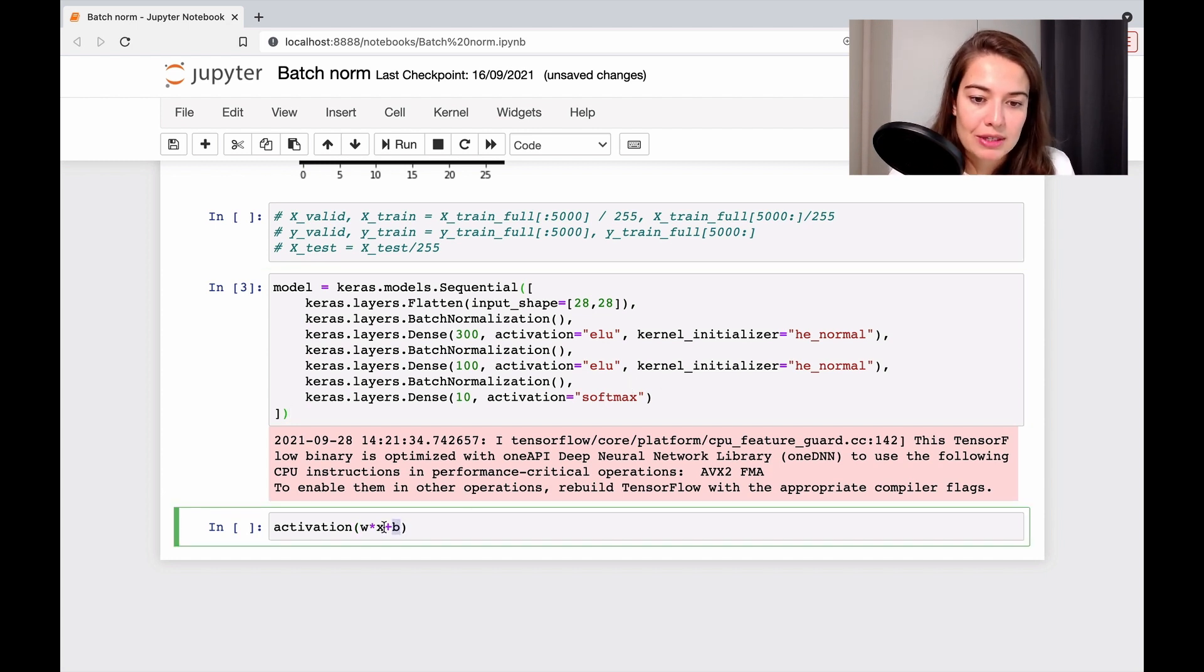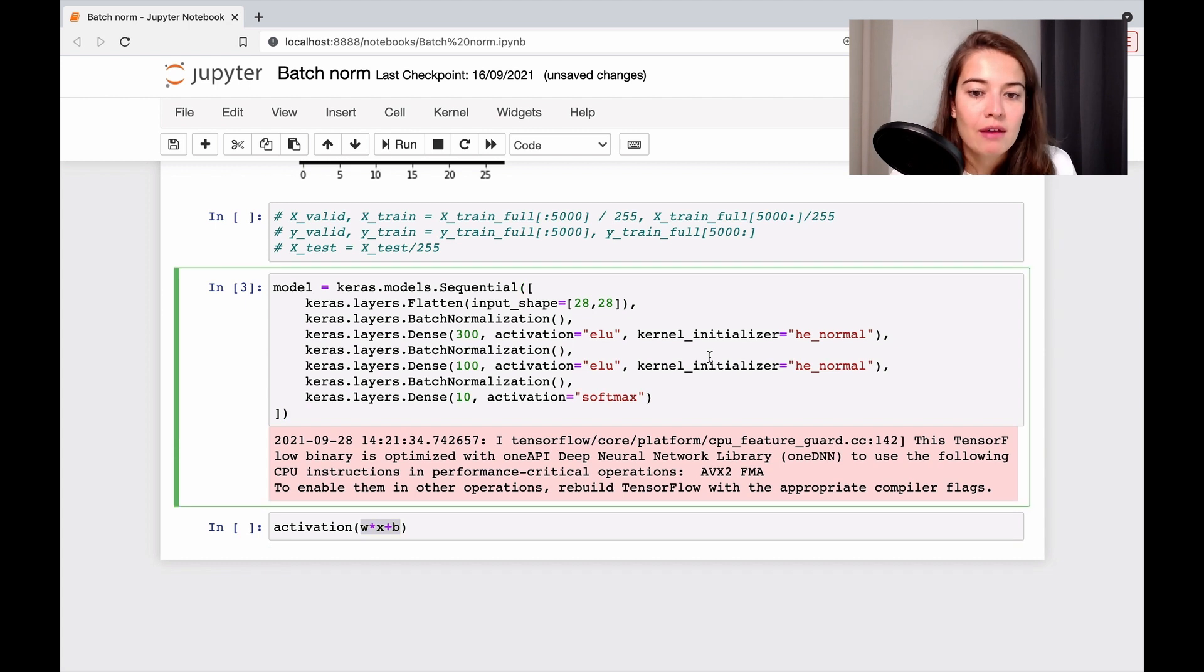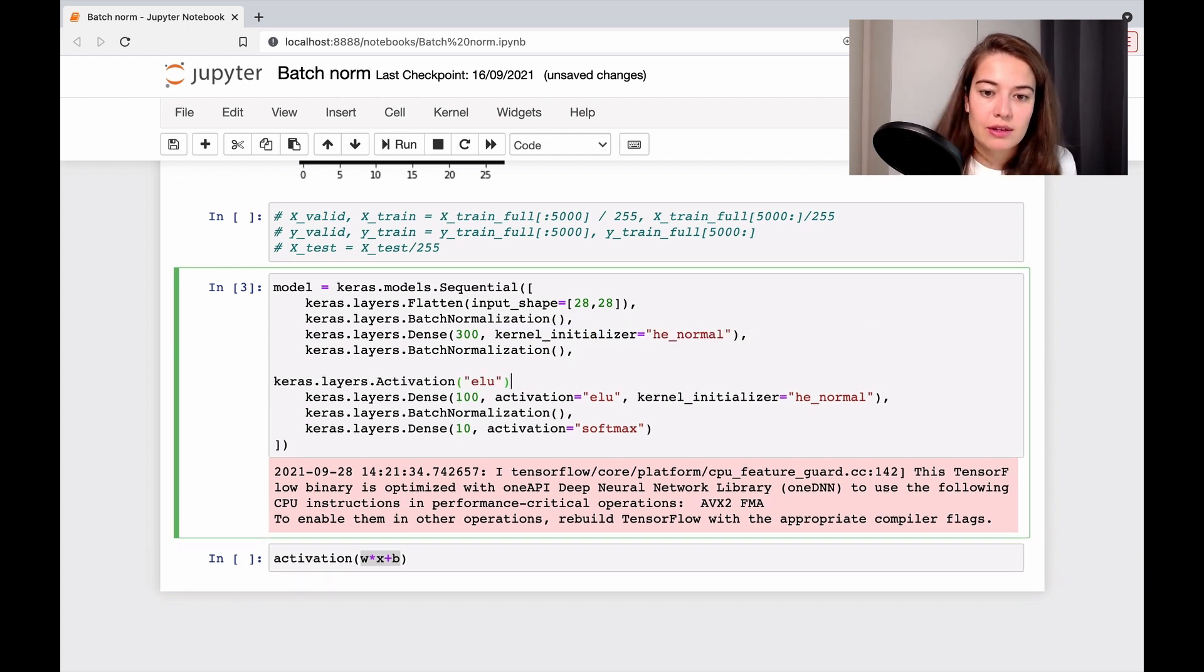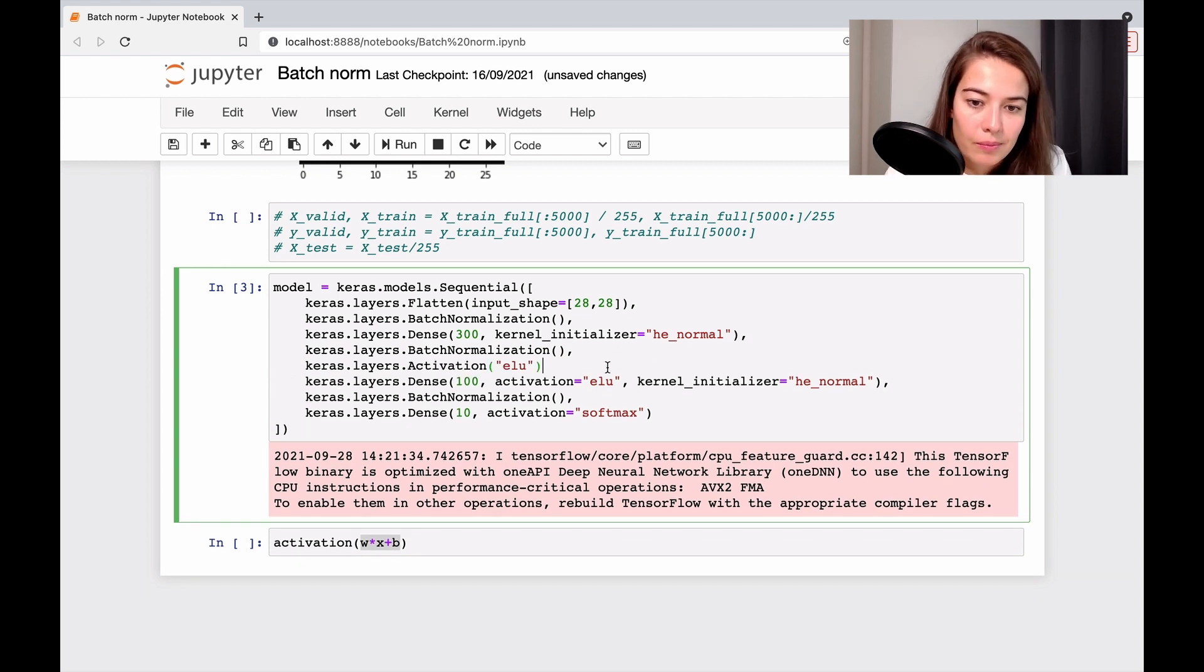So to do the batch normalization before the activation, what we have to do is we have to separate the activation from the layer. So then I will delete the activation from here, so it will not have an activation function. And then I would add it here. And also, one last thing that you need to do is you need to not have bias, because it doesn't really make sense.